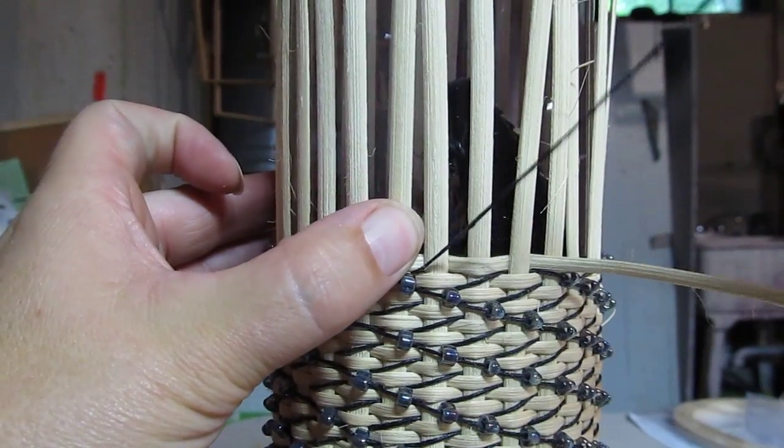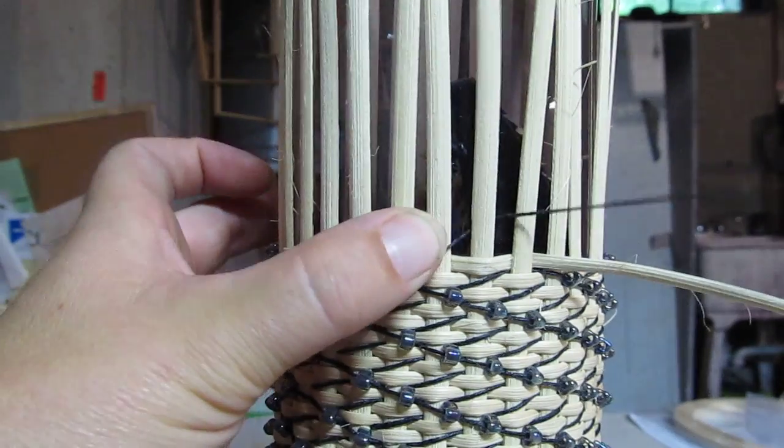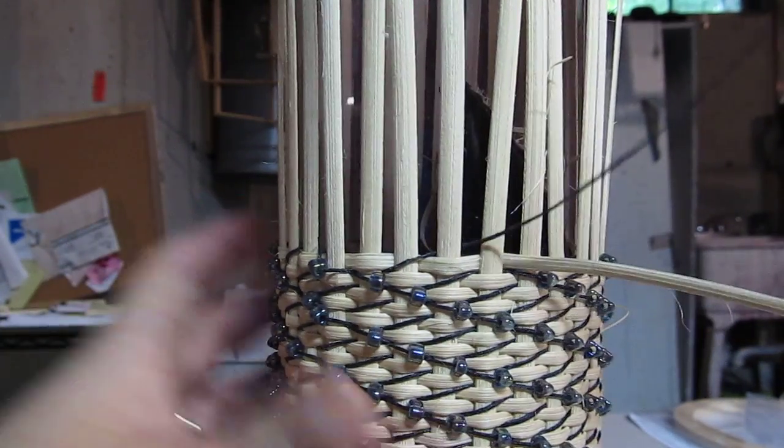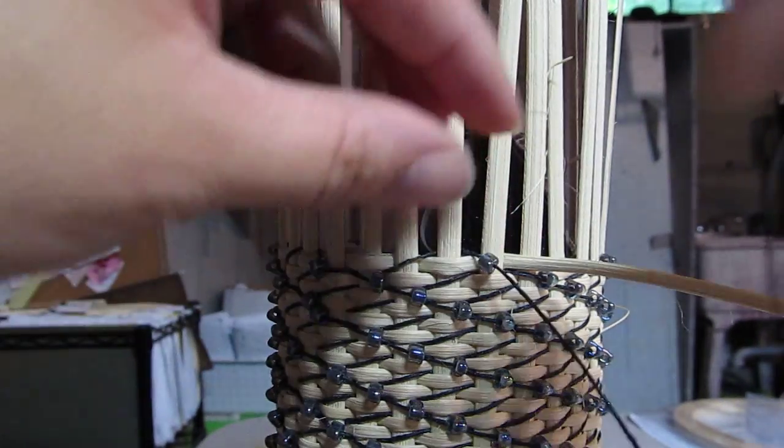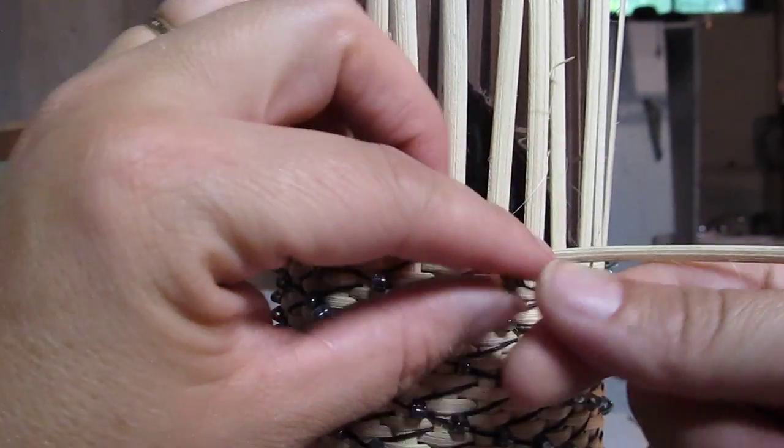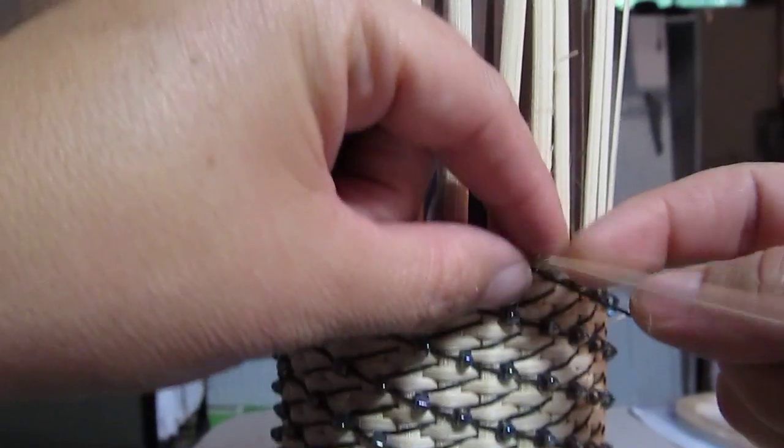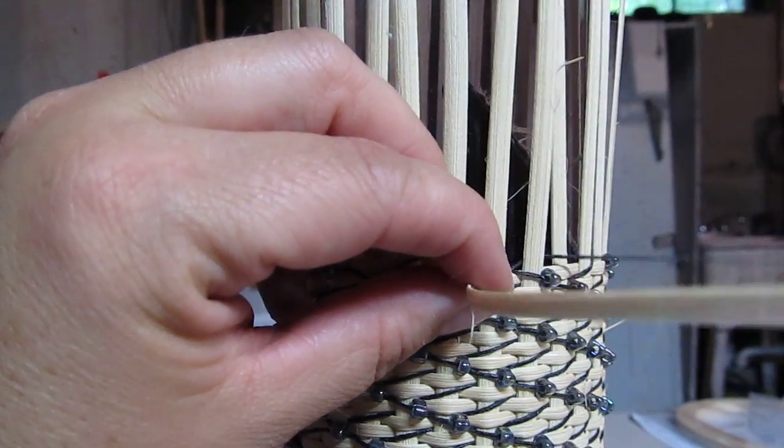Take your wax linen, bring it up on a diagonal and behind the next stake. Slide a bead into place and now you'll weave over the next stake like this. Over, move your three millimeter out of the way and bring it behind.